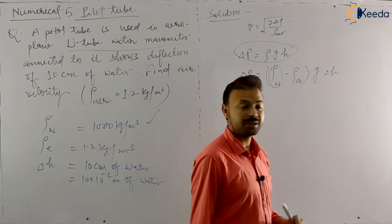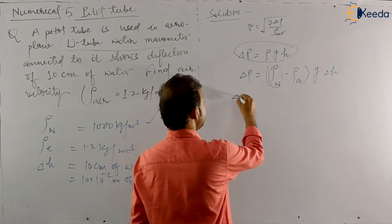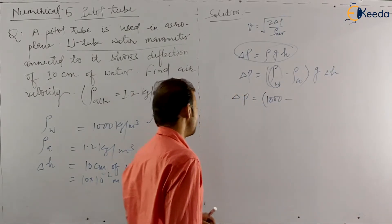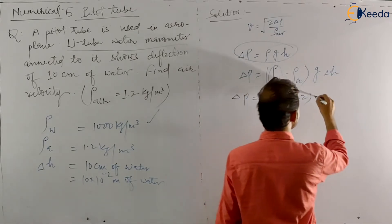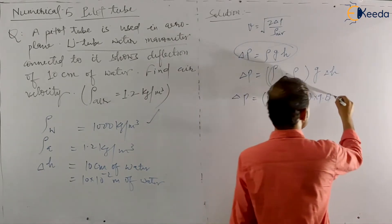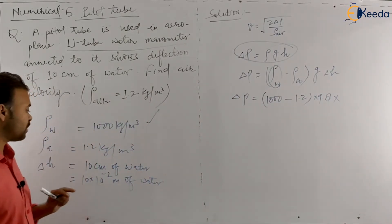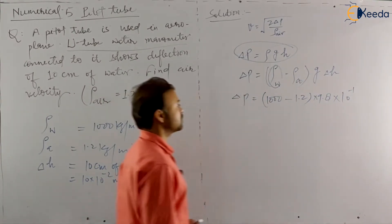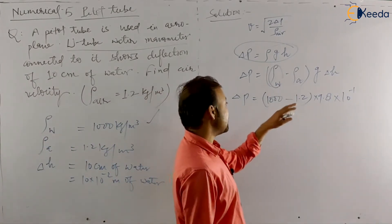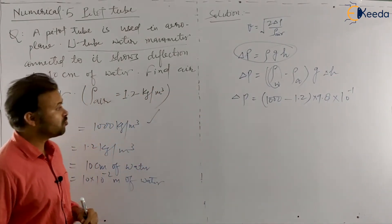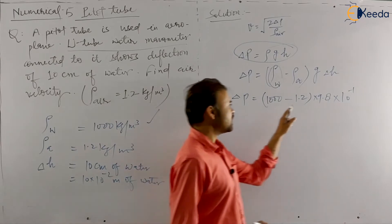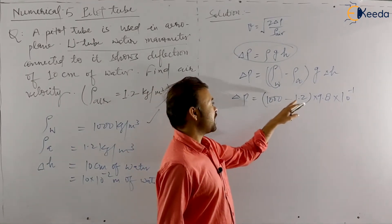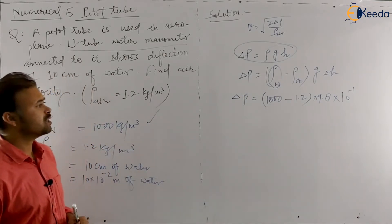G is 9.8 m/s². Substituting values: ΔP = (1000 − 1.2) × 9.8 × 10⁻¹. Note that using just 1000 versus 1000 minus 1.2 will not make much difference in delta P, since 1000 minus 1.2 is very close to 1000. You can use either the accurate formula or the approximation directly with rho_water = 1000.